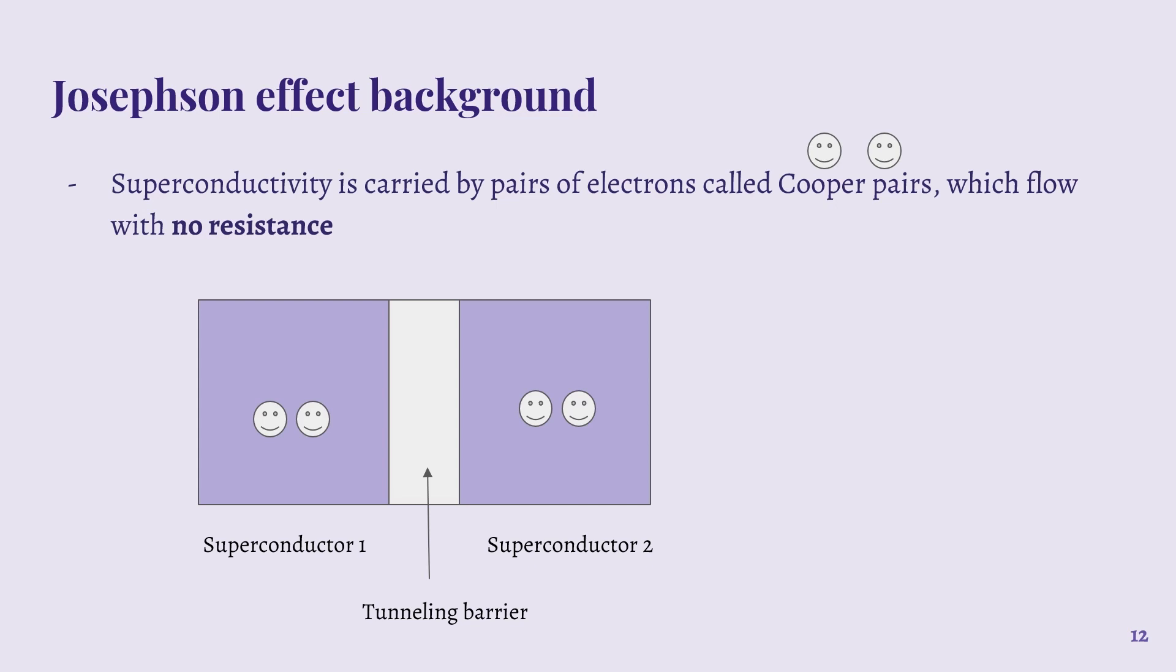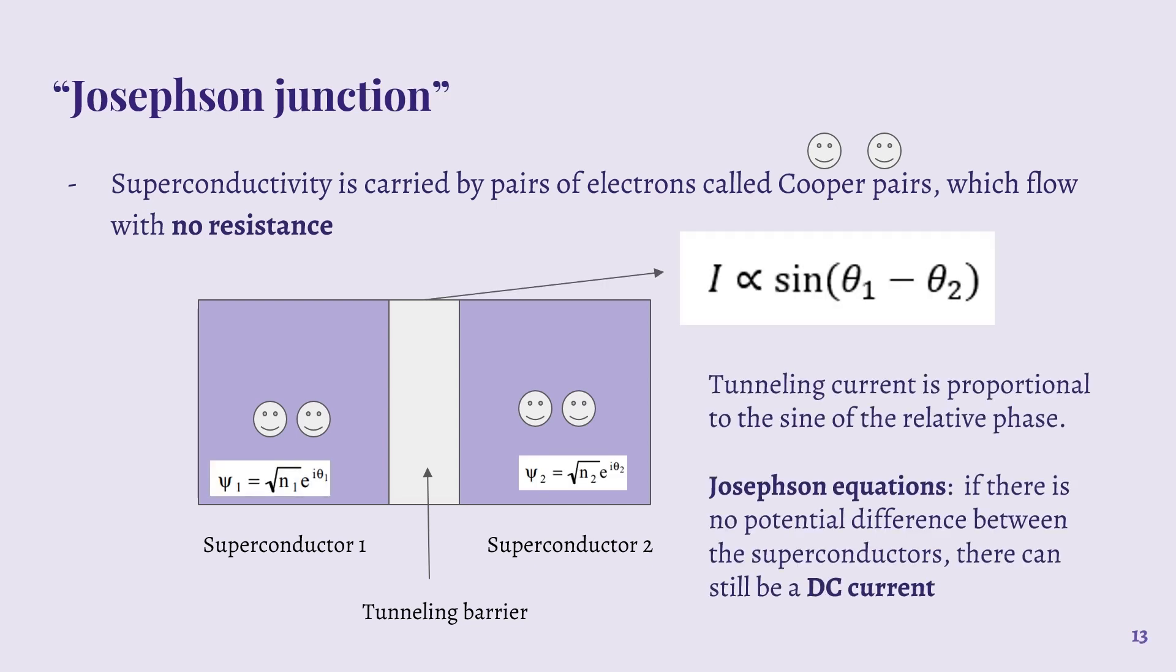The reason that this occurs is because Cooper pairs are bosons, while each of the individual electrons are fermions. So at low enough temperatures, the Cooper pairs condense into the same quantum state, just like superfluids which occur with atoms that are bosons. The strong correlation between the Cooper pairs means that they don't have any resistive interaction, so this also contributes to the fact that they're flowing with no resistance.